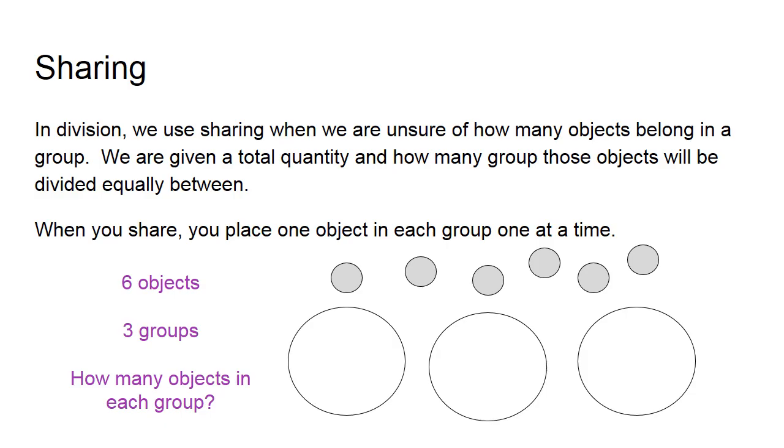When we share, the strategy we practice is giving one to each group one at a time. The example I have is 6 objects, 3 groups. How many objects are going to be in each group?